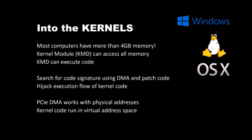Let's get into the kernels. Most computers today have more than 4 gigs of memory. If you're able to get the kernel module into the system, it should be able to access all memory and also execute code. So what we can do is search for kernel structures, code signatures, and whatever in lower memory using DMA, patch that code and hijack the execution flow of the kernel code.